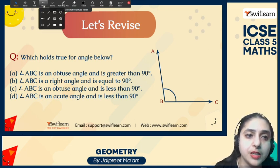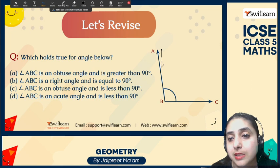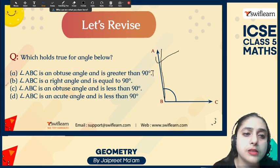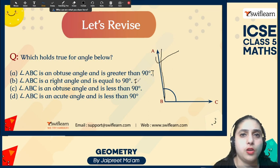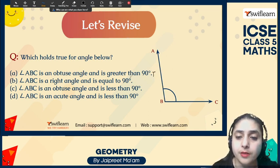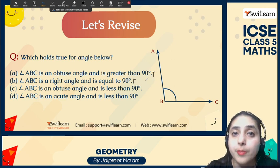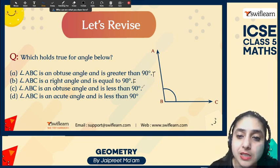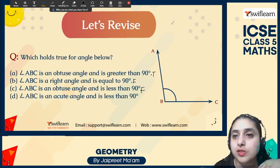Let's solve some questions. Question one: angle BAC is an obtuse angle — it is greater than 90 degrees, so that is true. Question two: angle ABC is a right angle — looking at it, it is not 90 degrees, so that is not correct. Question three: angle ABC is an obtuse angle and less than 90 degrees — since an obtuse angle is always greater than 90 degrees, this statement is false. The last statement refers to an acute angle, which is always less than 90 degrees — but from the figure we can see the angle is obtuse, so that statement is also false.